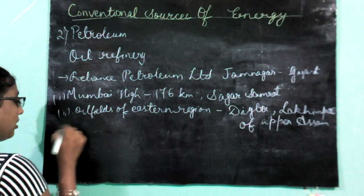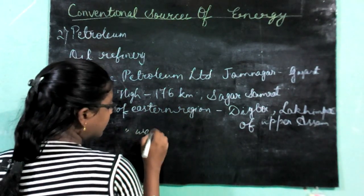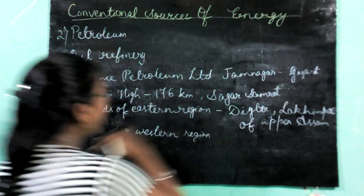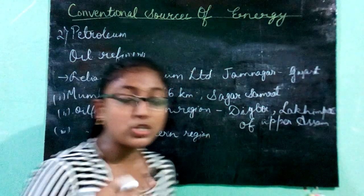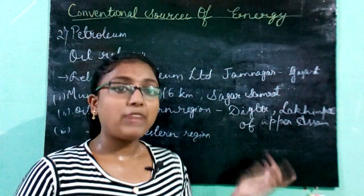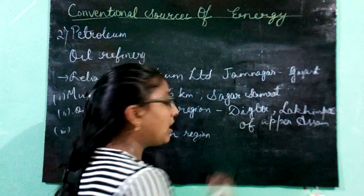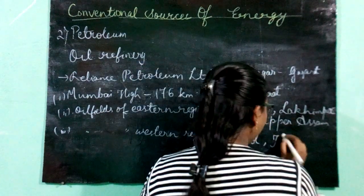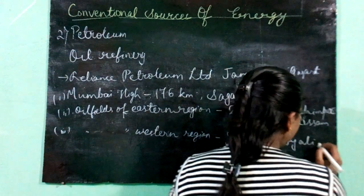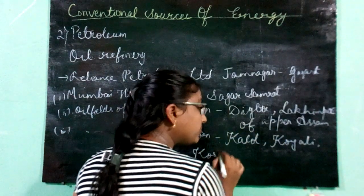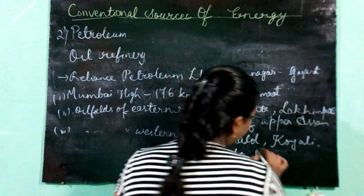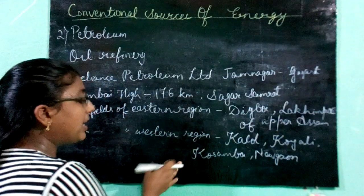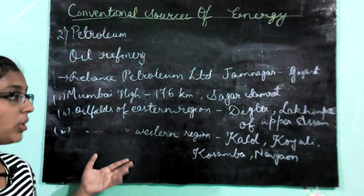The third area is the oil fields of the western region. Apart from the Cambay Basin — the Gujarat-Cambay belt — there are various other petroleum reserves in Gujarat itself, in places like Kalol, Koyali, Kosamba, and Navgaon.